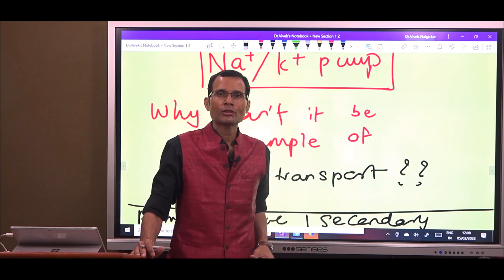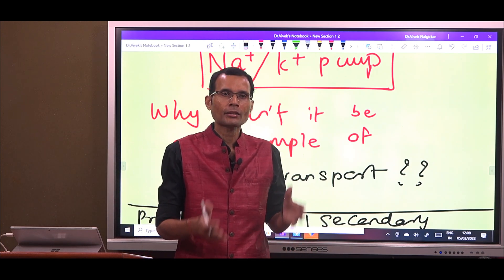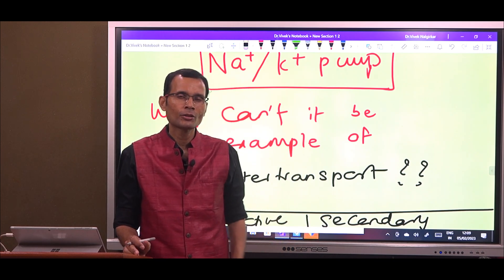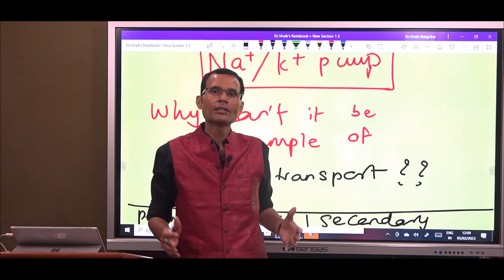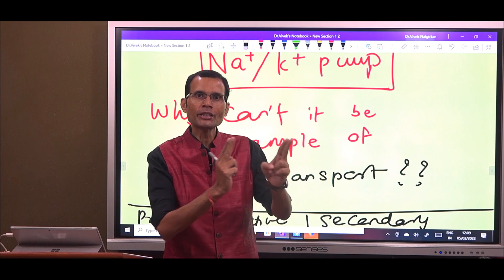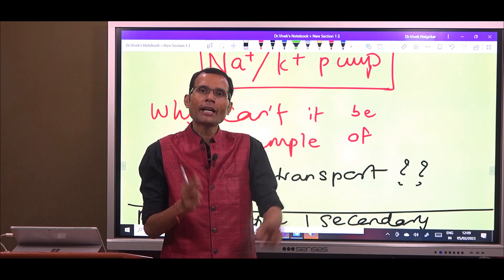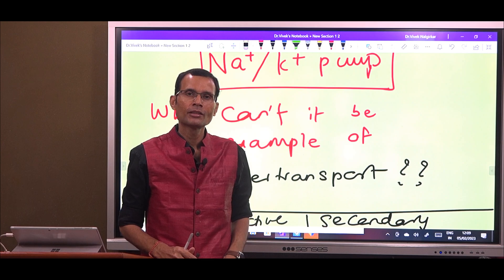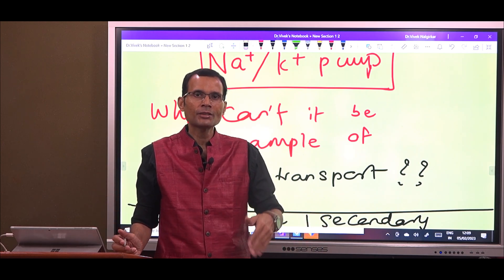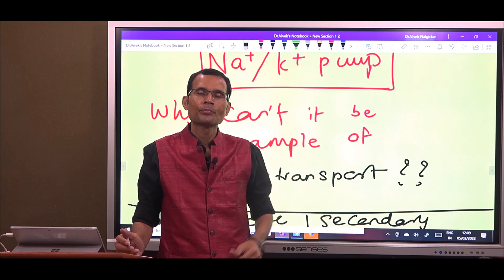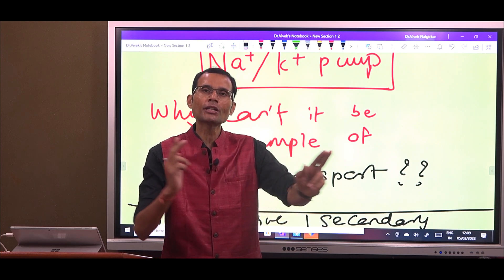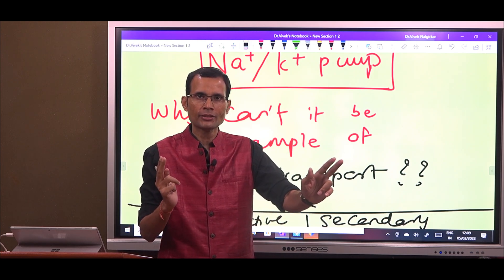I was taken aback, because first-year students generally know that the sodium-potassium pump is an example of primary active transport. So I asked him: what is your logic — why do you say this? He said two substances are going opposite to each other and energy is being spent, so it must be secondary active transport, and two substances going opposite is counter transport.